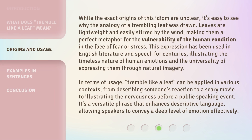While the exact origins of this idiom are unclear, it's easy to see why the analogy of a trembling leaf was drawn. Leaves are lightweight and easily stirred by the wind, making them a perfect metaphor for the vulnerability of the human condition in the face of fear or stress. This expression has been used in English literature and speech for centuries, illustrating the timeless nature of human emotions and the universality of expressing them through natural imagery.